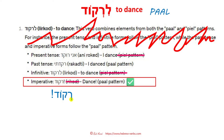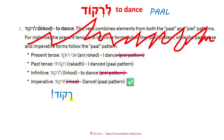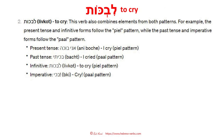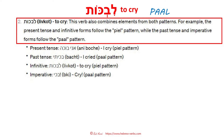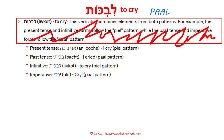Let's move on. The second verb was livkot — livkot, to cry. Also here we are in paal. Now let's see what ChatGPT has to say: 'This verb also combines elements from both patterns.' Okay, let's stop right here. Wrong. Completely wrong. So let's cut the BS right at the beginning.